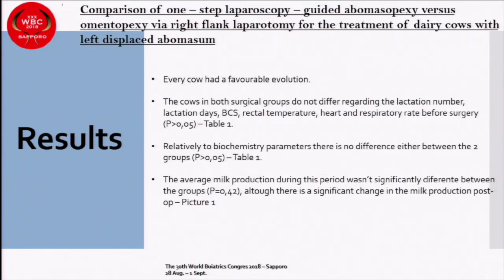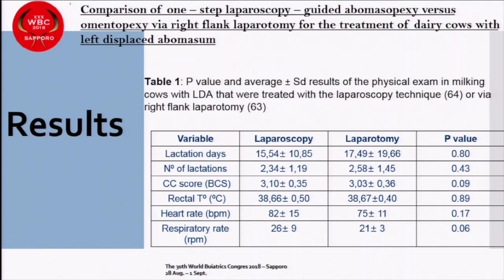Each cow had a favorable evolution. The cows in both surgical groups did not differ regarding lactation number, days in lactation, body condition score, temperature, heart rate, and respiratory rate before surgery, as seen in Table 1. Regarding biochemistry parameters, there was no difference between the two groups either, as shown in Tables 1 and 2. The average milk production during this period was not significantly different between the groups, P equals 0.42. However, there is a significant change in milk production post-operatively, as shown in Figure 1.